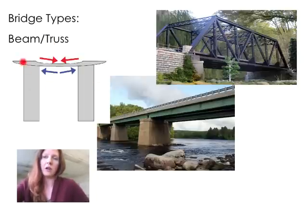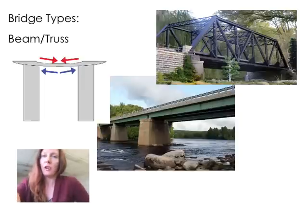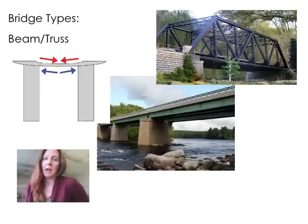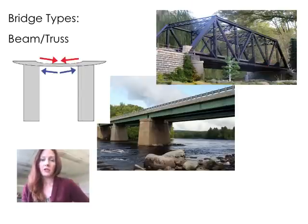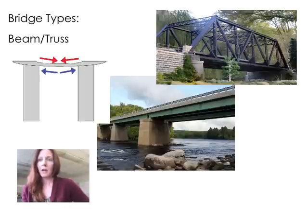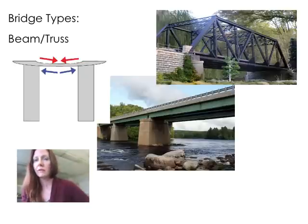Looking at how forces are applied to a beam bridge: as the load is applied, the top of the bridge gets compressed and the bottom gets stretched out. The longer the beam and the more load you put on it, the more stretching occurs, and you could end up with a snap. One way to fix this is by adding a truss — a beam bridge with a truss on top provides support and allows force to spread through the trusses. However it does add cost and height, which matters if tall vehicles need to travel under it.